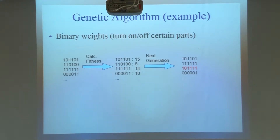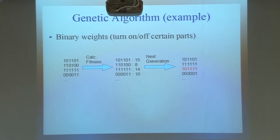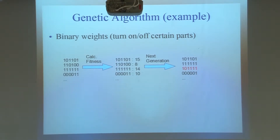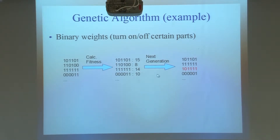Just a little example — this is with binary weights, though it doesn't have to be. On the left here you have a bunch of different individuals and their weights. Each line represents a different individual, and the ones and zeros mean turn on this feature or turn it off. You calculate those fitnesses and keep — in this instance — the top two.